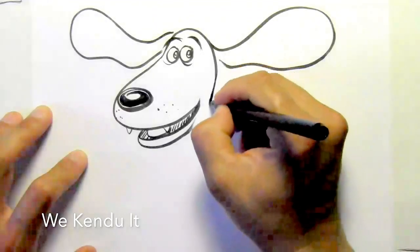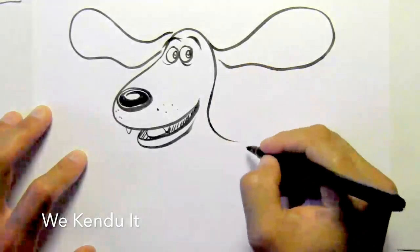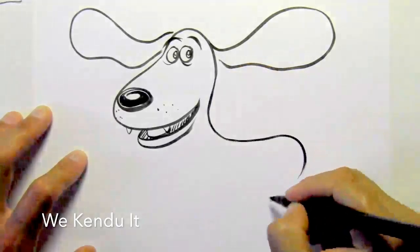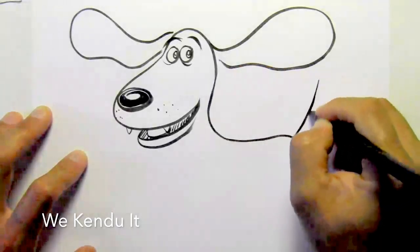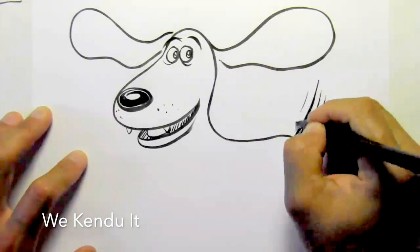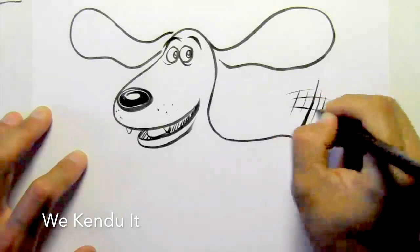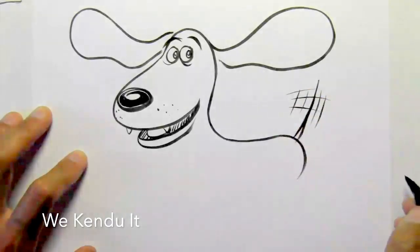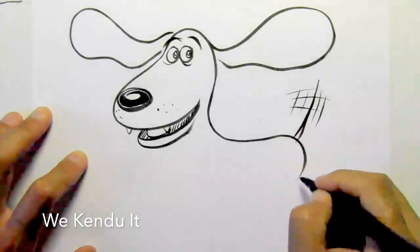Now let's do this body, like a hot dog shape. Triangle. Wiggle his tail. And now his body.